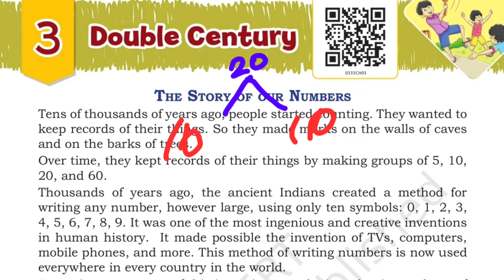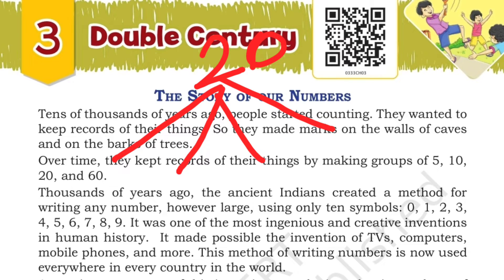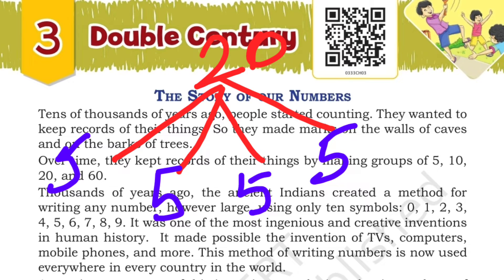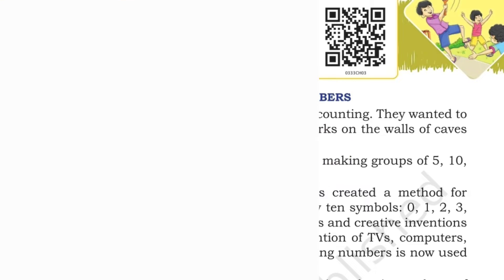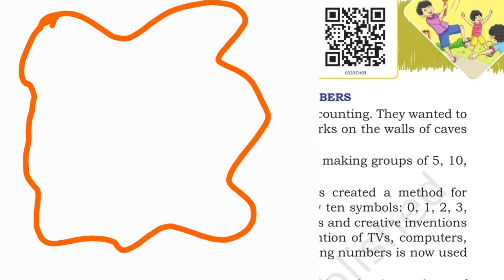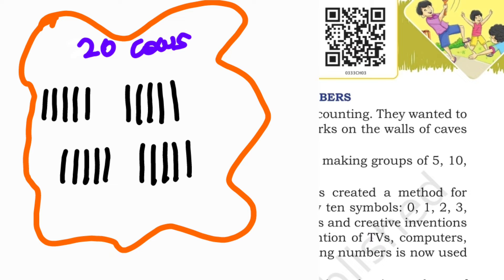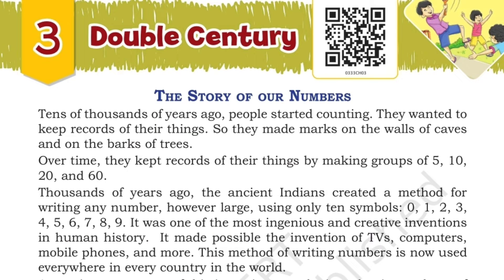They could also make 4 groups. For 20 cows with 5 in each group — 5 fours are 20. So they could make 4 groups and count like this. Let us imagine how they would mark these counts in their caves. Imagine this is a cave wall, and I am going to mark the number of cows, which is 20 in a group.